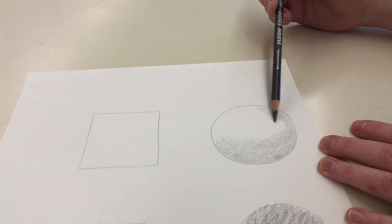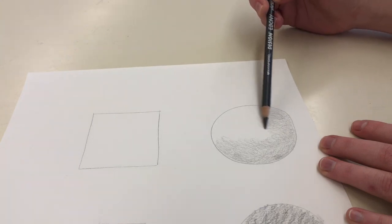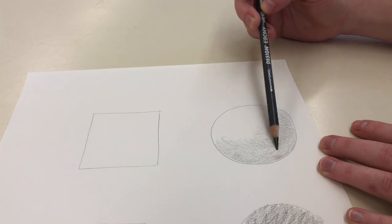When using ebony pencil you want to start by adding a light value over the entire shape and then from there you build your value.